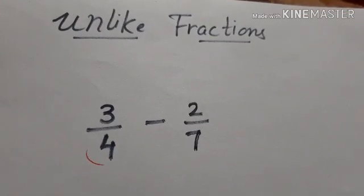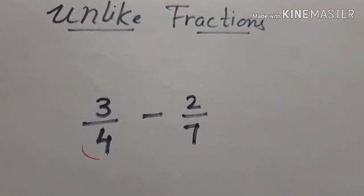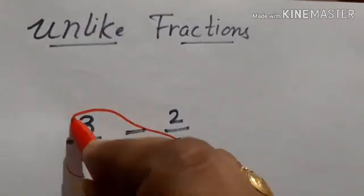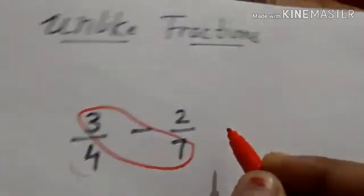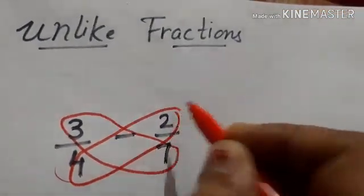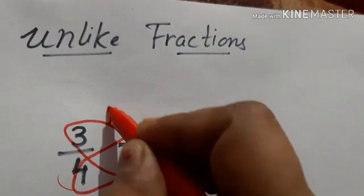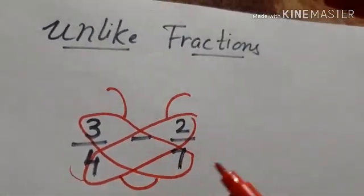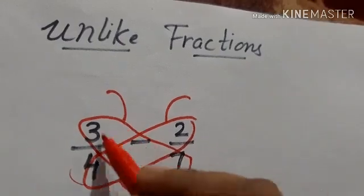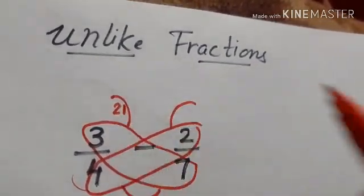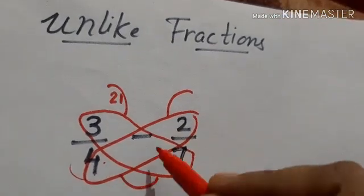Let us solve unlike fractions using butterfly method. Very easy to solve. So first of all, I am going to make a butterfly. Now I will multiply these two numbers and write down here, these two numbers and write down here.